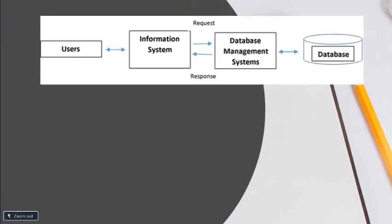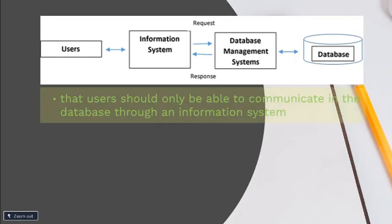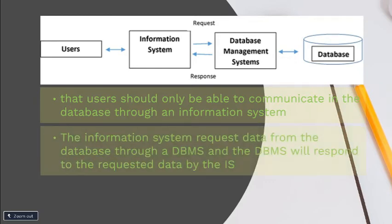This diagram shows that users should only be able to communicate with the database through an information system. The information system requests data from the database through the DBMS, and the DBMS responds to the request. Within this process, there are constraints or rules that cannot be violated, because each user can only have their respective user view — the logical description of the portion of the database required by that user to perform their task.